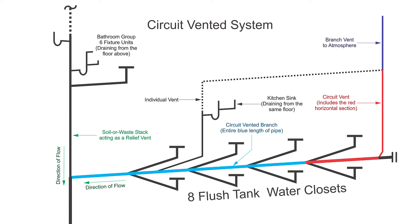This clause directs us to count up every single fixture unit that drains into the circuit vented branch. So that would be the eight flush tank water closets and that kitchen sink. But we're not supposed to count up anything from sentences 3, 4, and 5, which is the relief vent connection.